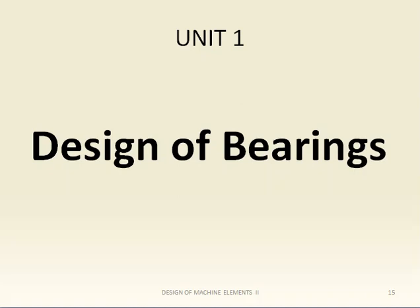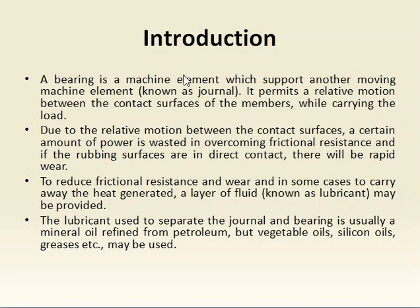Coming to the introduction: a bearing is a machine element which supports another moving machine element, known as a journal — essentially a shaft. It permits relative motion between them while carrying any load. At the contact surfaces between journal and bearing, rubbing action creates friction and heat generation, and useful power may be lost during power transmission to overcome this friction. To avoid this, we must provide lubrication between them.